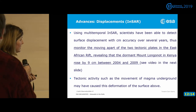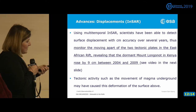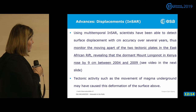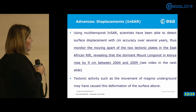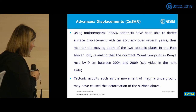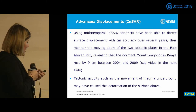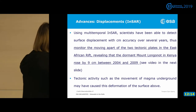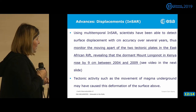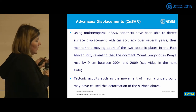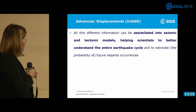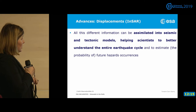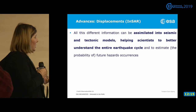Scientists used multi-temporal InSAR to detect surface displacement and monitor the East African Rift, revealing that Mount Longonot in Kenya has grown by 9 centimeters. The rise and growth of mountains can also be caused by volcanic activity, with magma underground causing deformation on the surface. This different information can be assimilated into seismic and tectonic models, helping scientists better understand the entire earthquake cycle.